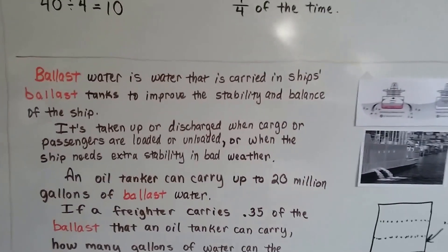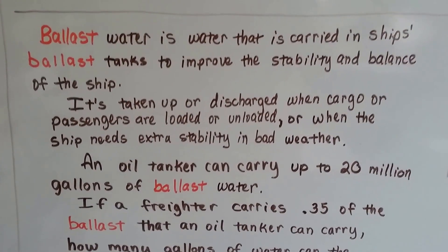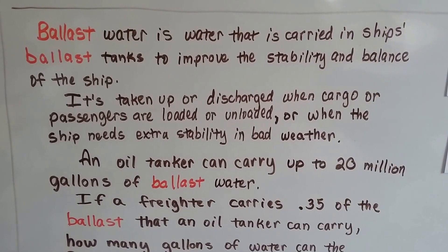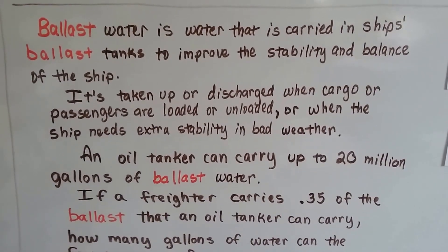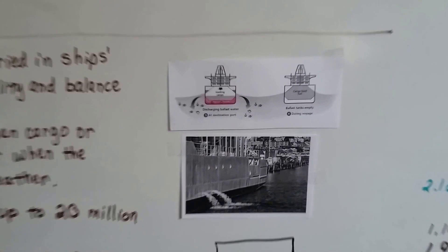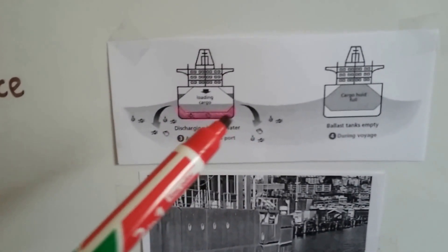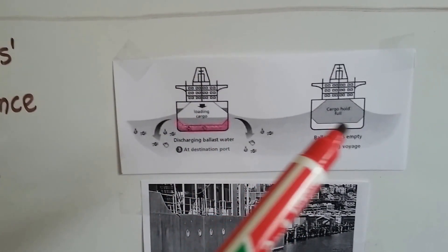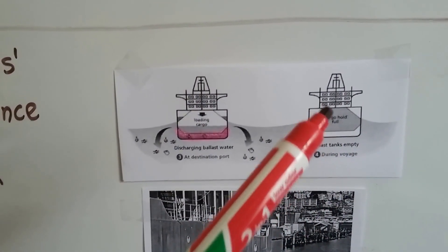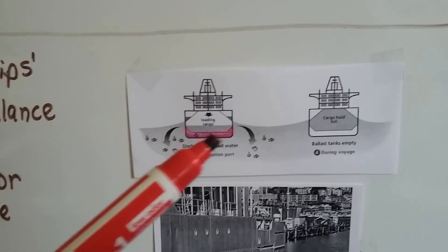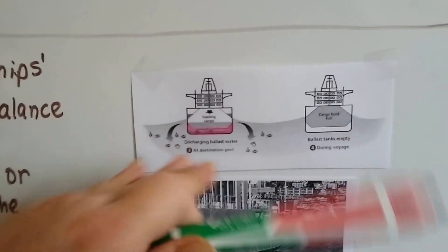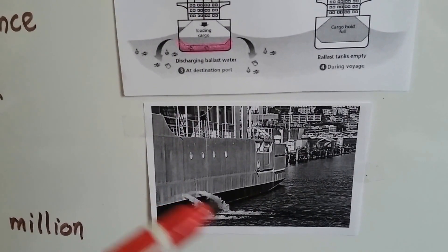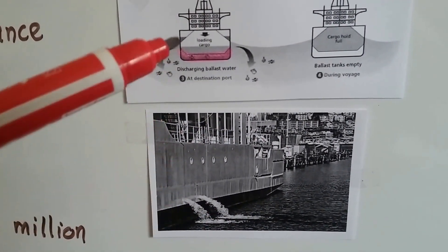Okay, here's another one. Ballast water is water that is carried in ships' ballast tanks to improve the stability and balance of the ship. And it's taken up or discharged when cargo or passengers are loaded or unloaded, or when the ship needs extra stability in bad weather. So, just to show you, here's a picture. And the ballast tanks sit at the bottom where this pink is. So here it's full of sea water, and here it's empty. Because the cargo tank is full, so the ballast is empty. When they drop the cargo off, they fill it with ballast, and that keeps the ship stable. And you might have even seen ships letting the water out. You'll see it streaming out the sides of the ship. They're letting the ballast water out.